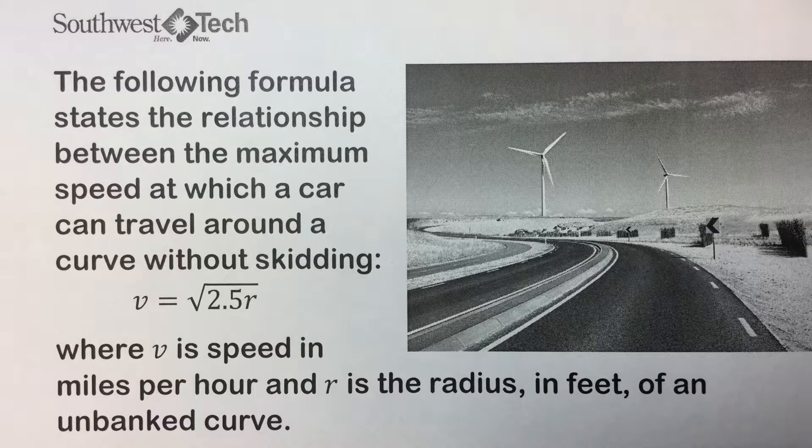The following formula states the relationship between the maximum speed at which a car can travel around a curve without skidding: V equals the square root of 2.5 times R.